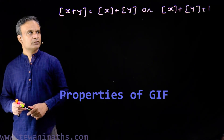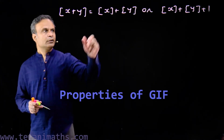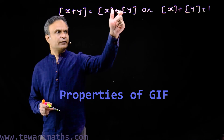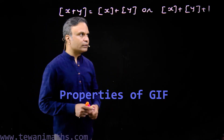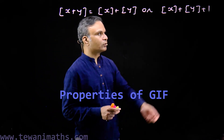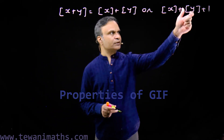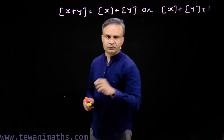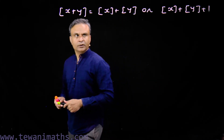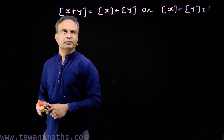We can now view this property: the greatest integer of x plus y is equal to the greatest integer of x plus the greatest integer of y, or the greatest integer of x plus the greatest integer of y plus 1. We have here two possibilities.